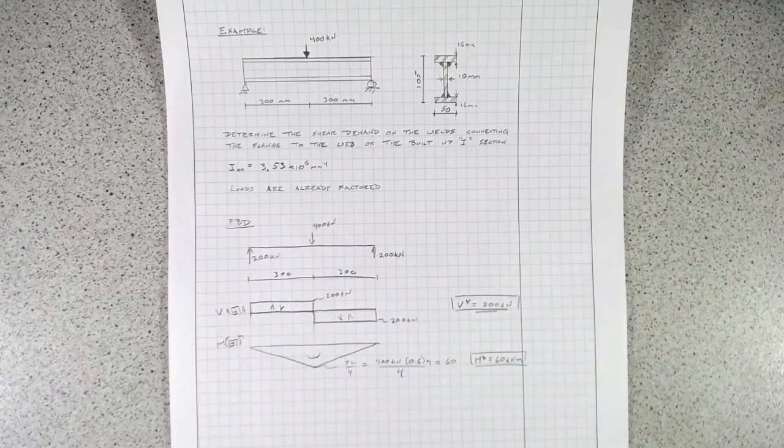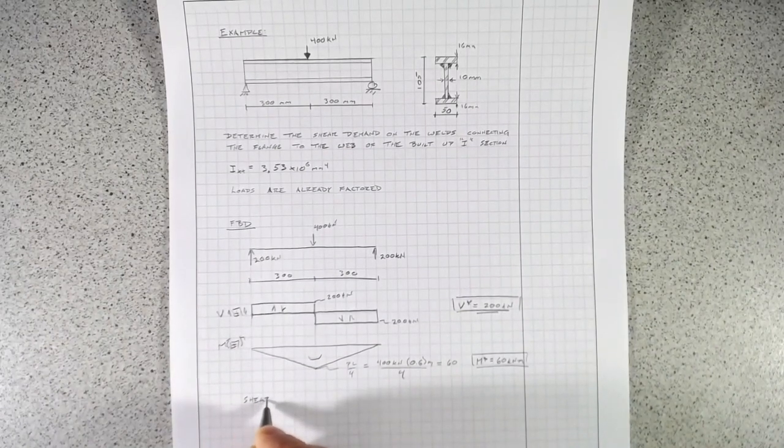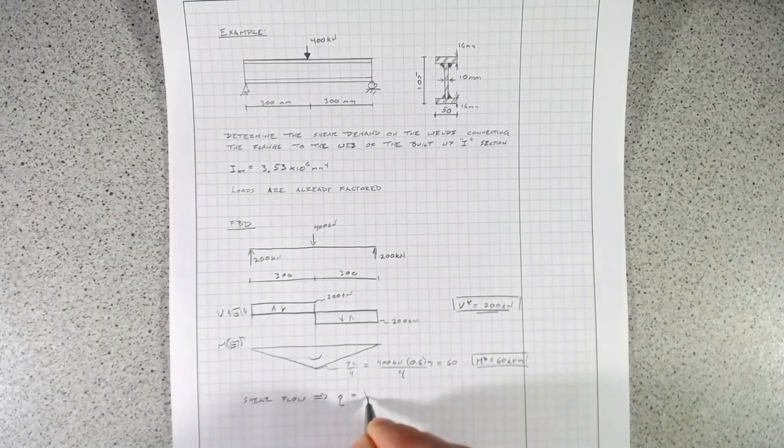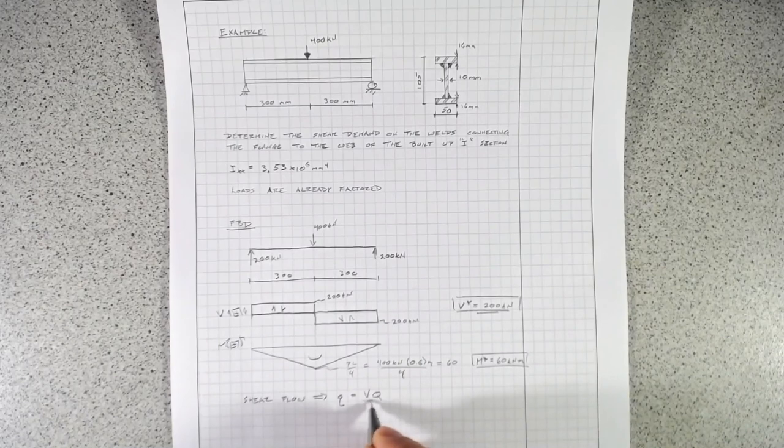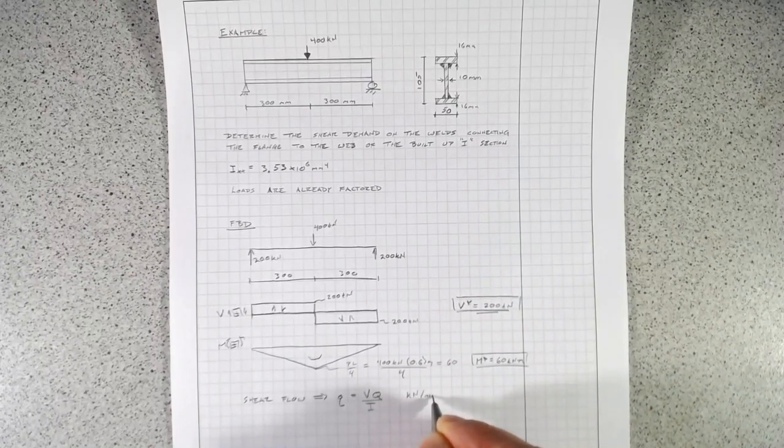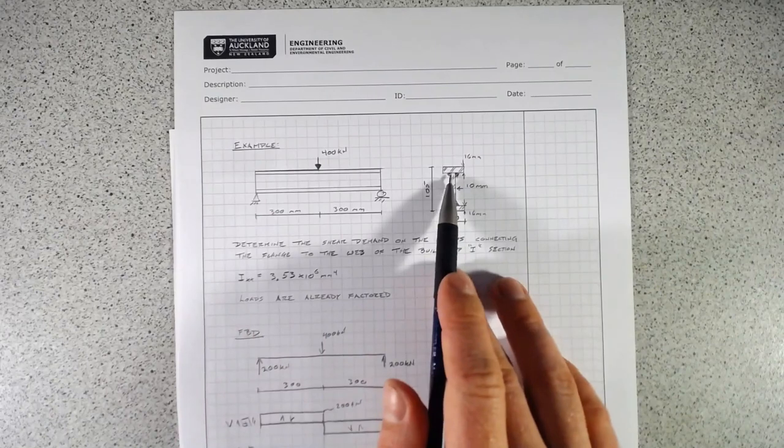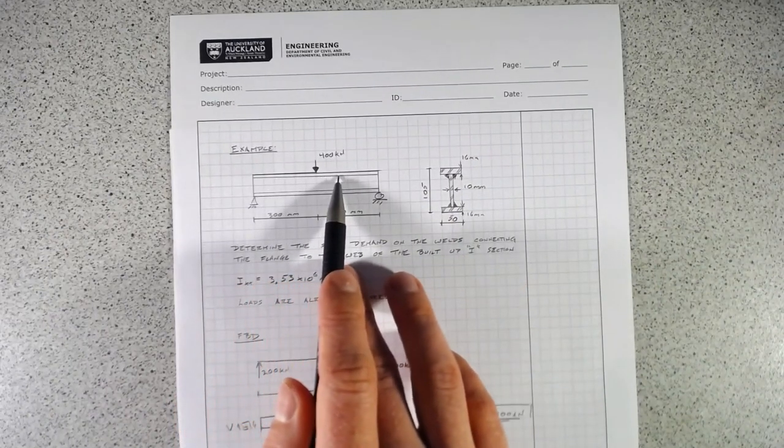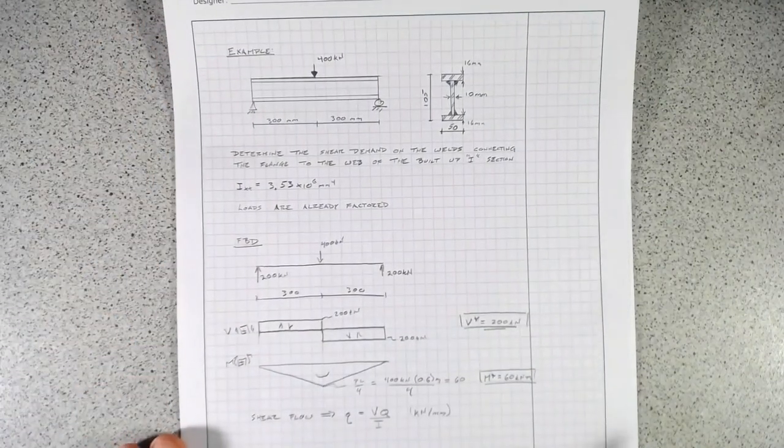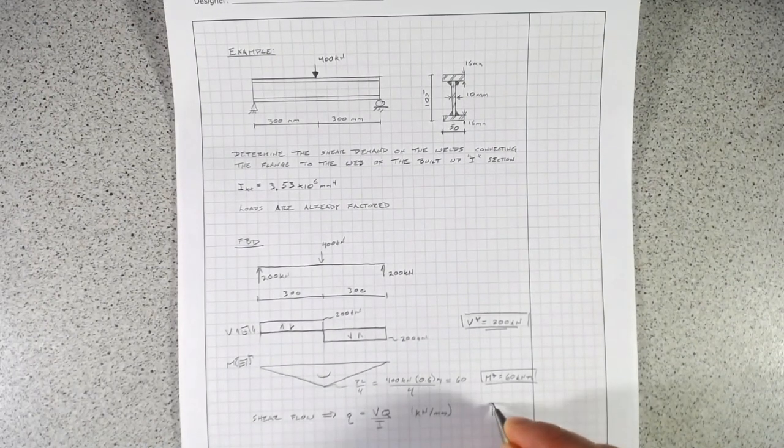Now what we need to do is determine what that shear demand is on the flanges. We do this with shear flow. If we remember, our shear flow equation is Q, and that equals our applied shear times the first moment area over I. That will be in kilonewtons per millimeter. What we're looking for is, along this beam, along this flange, what is the shear which is going to develop per millimeter along this element?